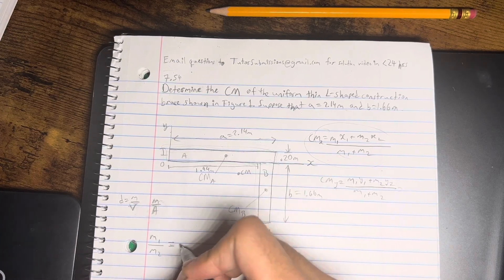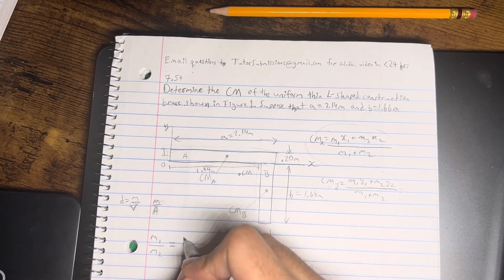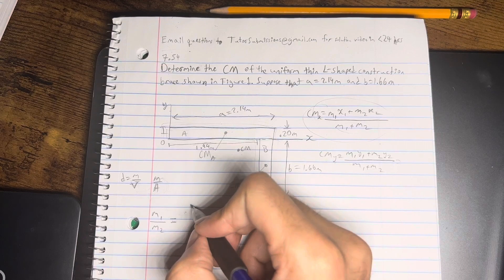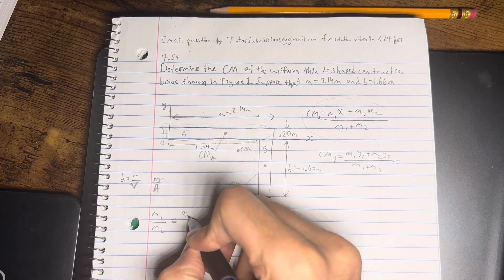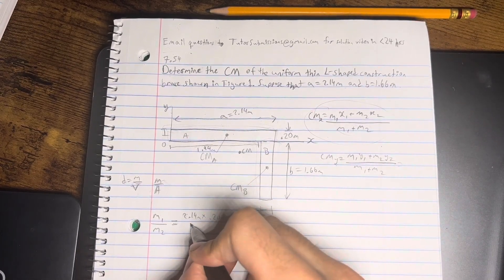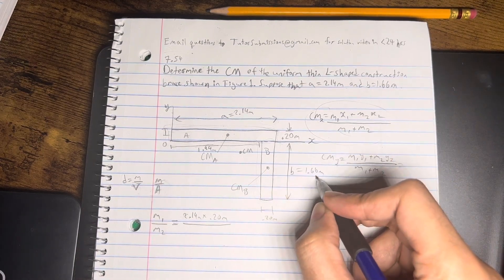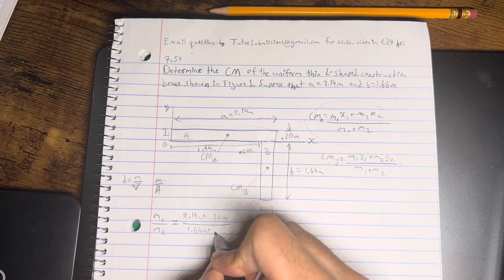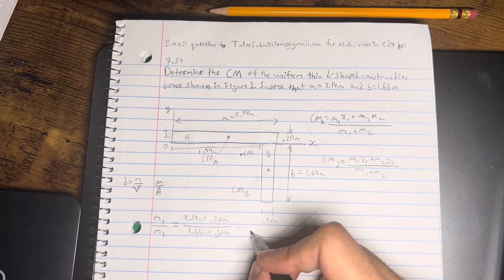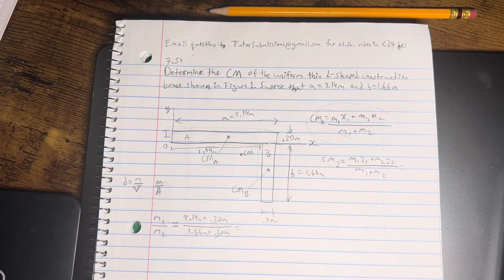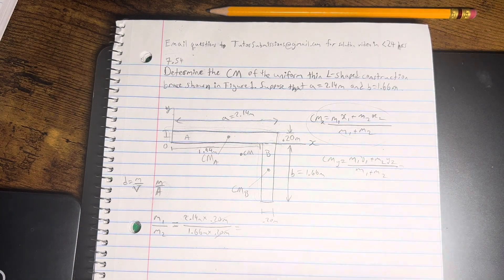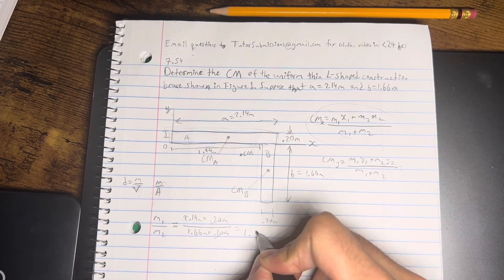So now if we wanted to come up with a ratio for that, we're going to write the area of mass one over here and that's going to be 2.14 meters times 0.2 meters. And then we're going to have this over B which is 1.66 meters times 0.2 meters as well. And as you can see, these two are going to cancel. And so we're just left with 2.14 over 1.66. And that's going to be 1.29.